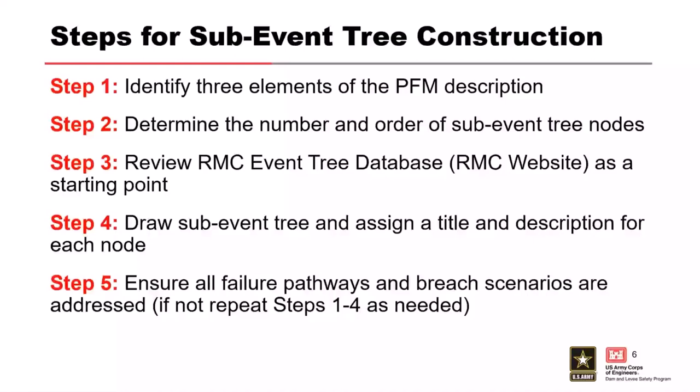Step one is identifying the three elements of the potential failure mode description for the PFM that you're evaluating. This assumes you already have a complete failure mode description written. Step two is to determine the number and order of sub-event tree nodes. Step three is to review the RMC event tree database as a starting point to see if an event tree of similar construction already exists. Step four is to draw the sub-event tree and assign a title and description for each node. Step five is to ensure that all failure pathways and breach scenarios have been addressed; if not, steps one through four should be repeated.